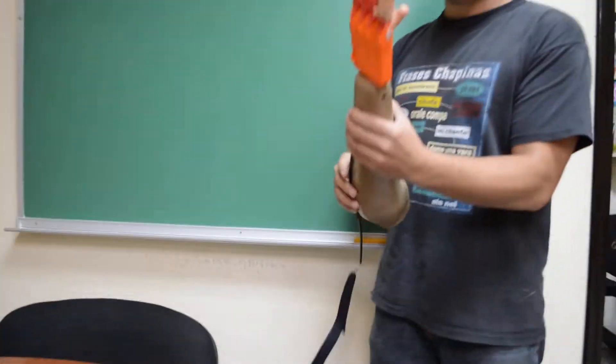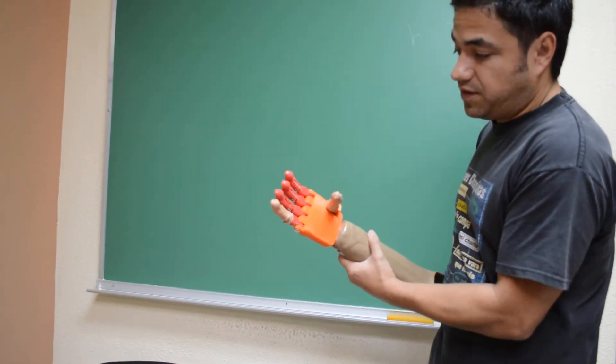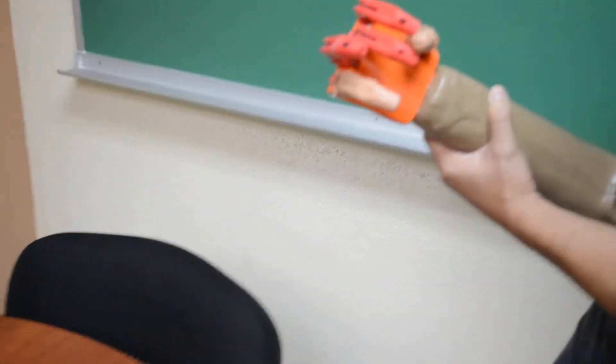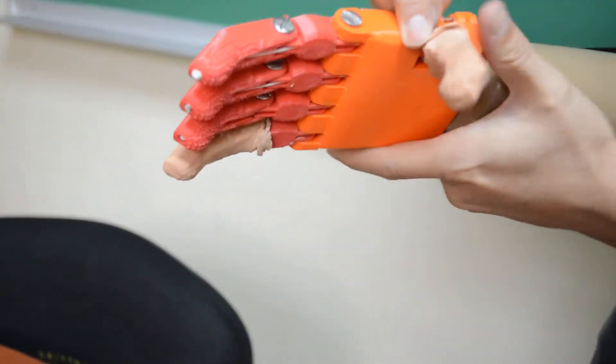So what we did is, here we have this initial position where we can, for example, do tripod grasp. If I want to change it, then I will just push here, rotate the thumb to the desired position, and let go.